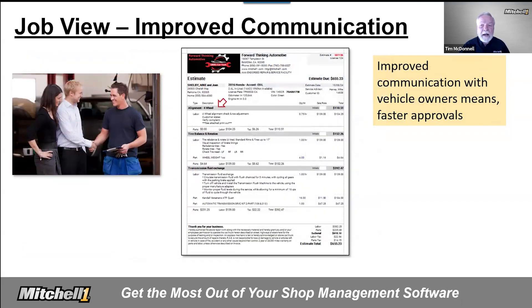Here's a closer look at how JobView's redesigned estimate helps shops have clear conversations with vehicle owners about the work that needs to be done. Each job now has its own shaded title, making it all much easier to understand. No more having to take the time to explain the work, because previous document templates listed parts and labor in two uneven columns that didn't always line up. Each job is clearly spelled out with subtotals so customers can instantly see how much each job will cost.